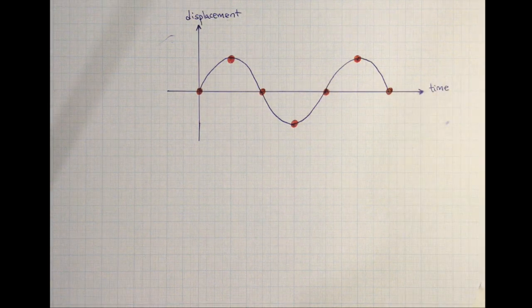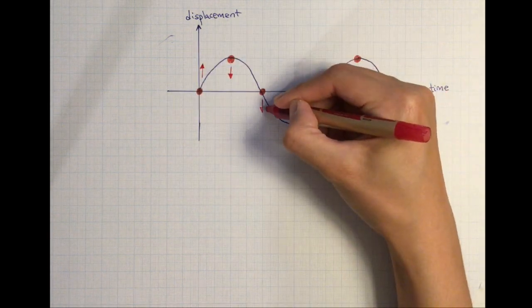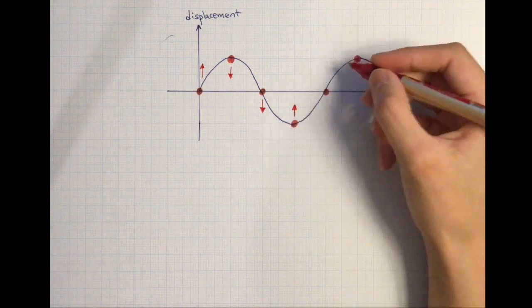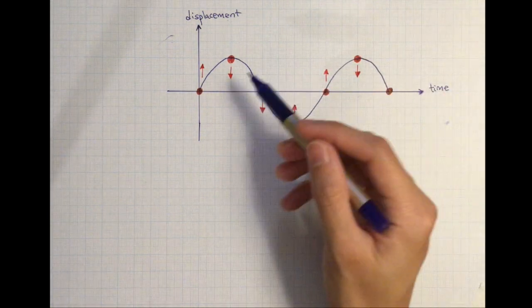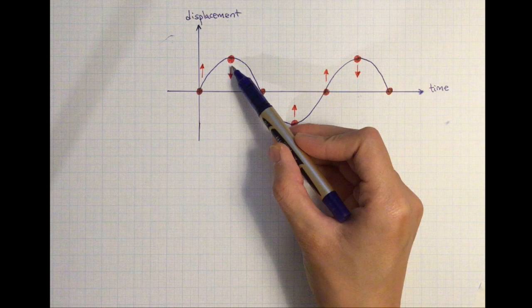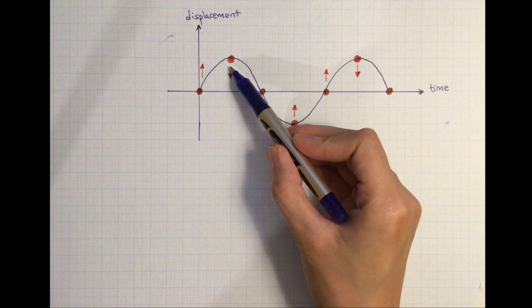All these arrows that I'm drawing predict the motion of the particle in the next instant in time. Now, wouldn't it be great if we can find a method to compare the position of this particle at this time, relative to what it was like originally? This method involves looking at the phase of a particle.